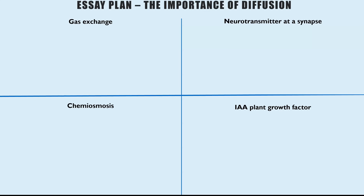Have a look at your revision guides, textbooks, or the specification and pick your own four topics that are examples of diffusion — that does include facilitated diffusion and osmosis as a special type of diffusion. Once you've done that, you need to plan your AO1 and your AO2. AO1 is your knowledge, AO2 is your application of knowledge. AO stands for assessment objective — criteria that examiners use.